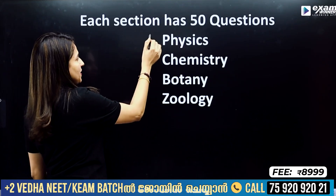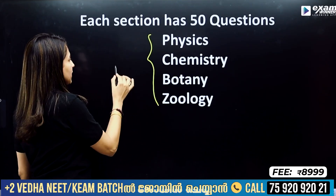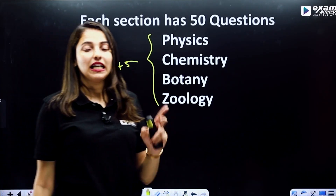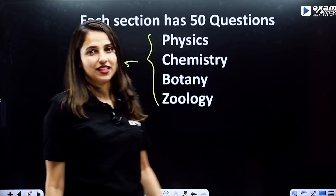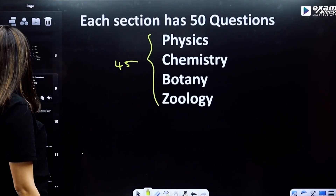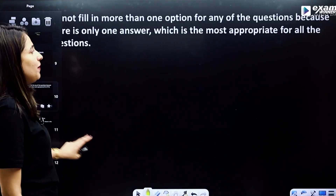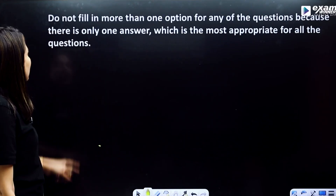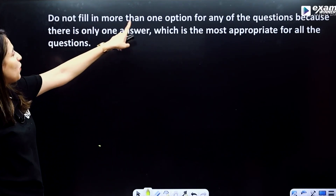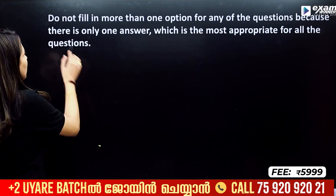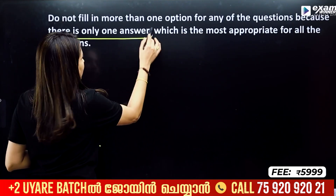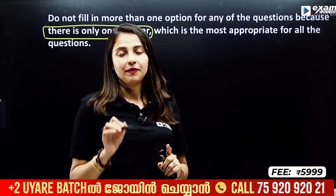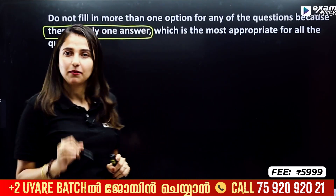In Part B for each subject, you have options to choose from. Because in Part B you have options, do not fill more than one answer for any question, because there is only one correct answer. That is why you have to carefully fill in the OMR sheet, as this is an MCQ format.